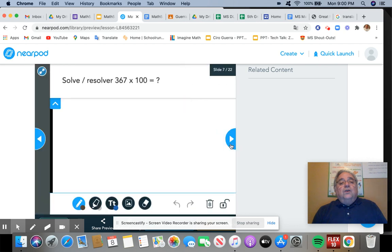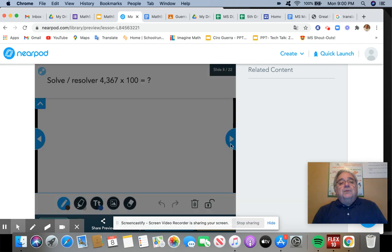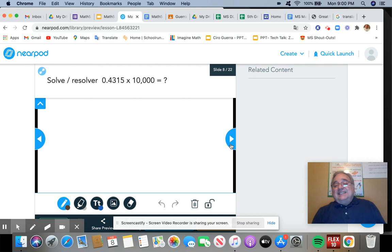One of the other ones that I wanted to go over is one that might have been a little bit more difficult for some of you, because you're multiplying by 10,000. But if we look at it, we have 4,315 ten-thousandths, and we're multiplying it by 10,000. Well, if I have 10,000 has one, two, three, four digits that are zero, which lets me know that I'm going to be moving the decimal over four digits. So it's going to be one, two, three, four, which is going to give me the answer 4,315.